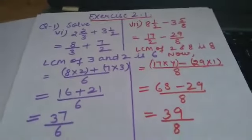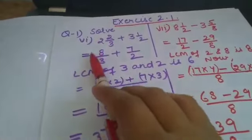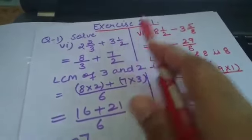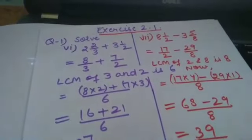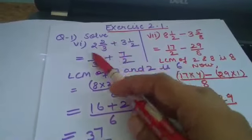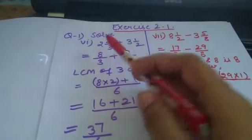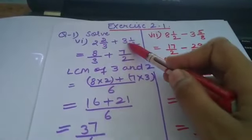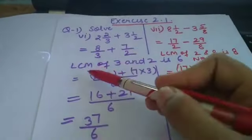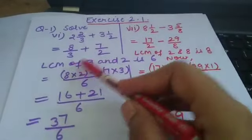Question number 1, part 6: you have to solve 2 whole 2 by 3 plus 3 whole 1 by 2. These are mixed fractions and you have to add them. We will learn how to add and subtract fractions. First I will convert them to improper fractions: 2 whole 2 by 3 becomes 8 by 3, and 3 whole 1 by 2 becomes 7 by 2. Next, you have to take the LCM of the denominators. The LCM of 3 and 2 is 6.